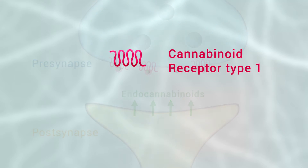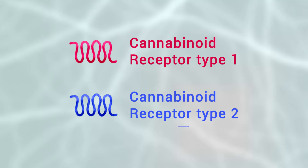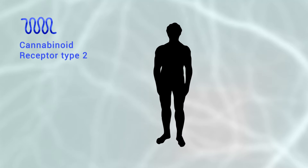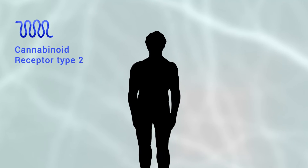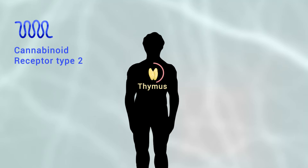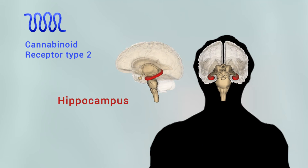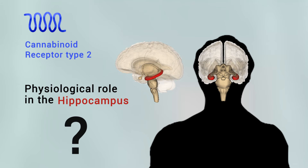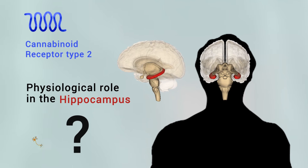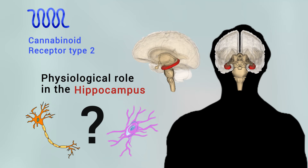In contrast to the well-established function and localization of cannabinoid receptor type 1, little is known about the role of cannabinoid receptor type 2 in basic neurotransmission. Until recently, the cannabinoid receptor type 2 was referred to as the peripheral cannabinoid receptor, where it participates in the regulation of immune responses and is responsible for the anti-inflammatory effects of cannabis. In the hippocampus, the presence of cannabinoid receptors type 2 has been suggested, but their physiological role is uncertain. Furthermore, it is not clear whether they are expressed neuronally or mainly in cells of the immune system, such as microglia.